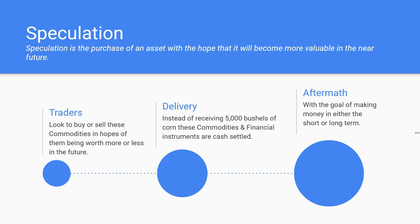The whole reason everyone gets into trading is to make money. When we close out our position, we want to walk away with a profit. You can make money by taking long positions — buying in hopes the asset increases — or by shorting and selling that asset in hopes the underlying continues to go down in value.